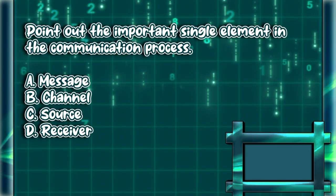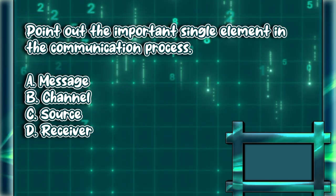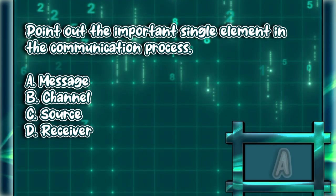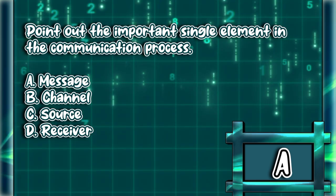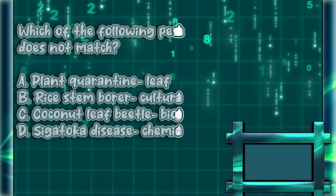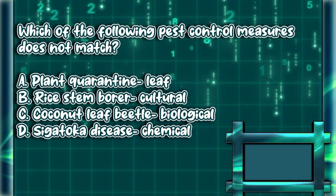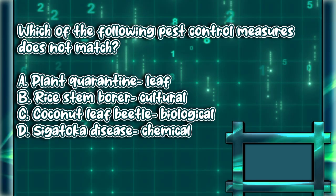Point out the most important single element in the communication process: a) message, b) channel, c) source, d) receiver. The answer is letter A.